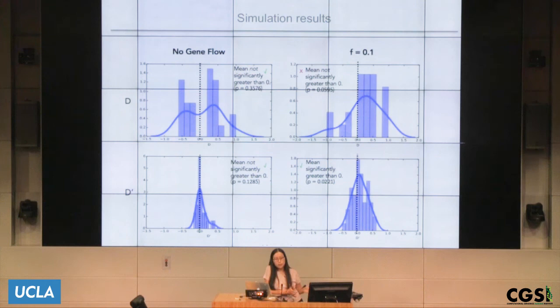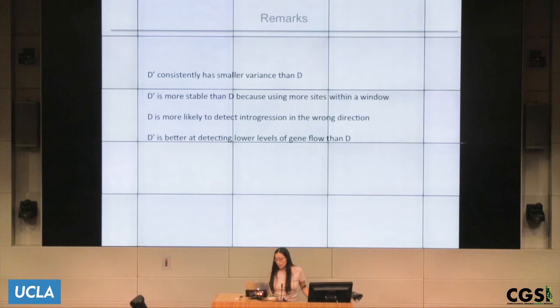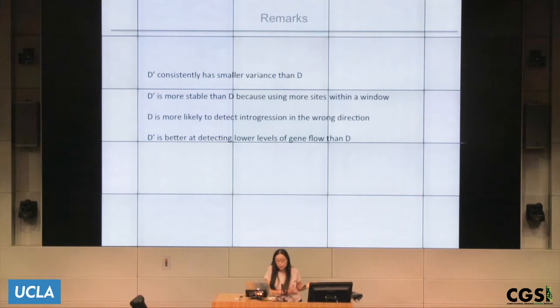Potentially we should be able to use D-prime to identify local regions of introgression in non-model organisms. D-prime consistently has smaller variance than D. It is more stable because you have more sites — more information. D is in some cases very likely to detect introgression in the wrong direction. D-prime is better at detecting lower levels of gene flow than D. So I think it's a good statistic.